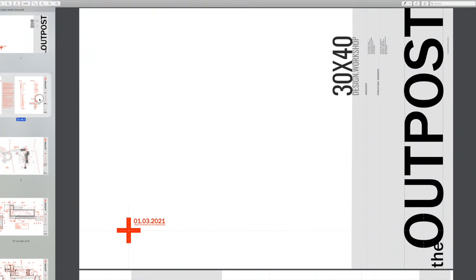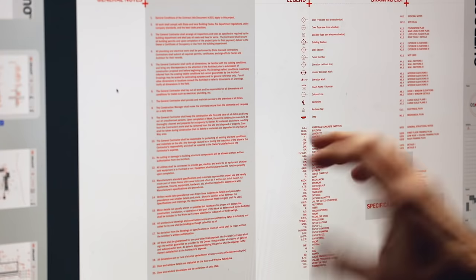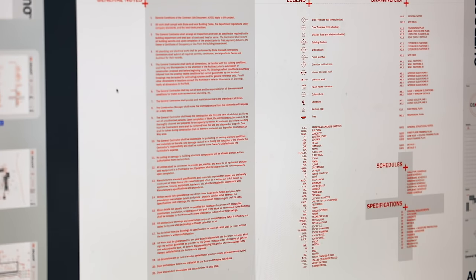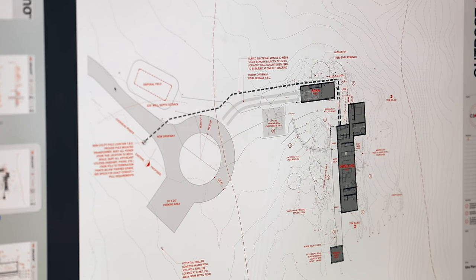We have our drawing set here — about 35 to 40 drawings at the moment — and we always start off with the very general and move to the specific. Any written word takes precedence over a drawn line, in the same way that a large-scale detail might take precedence over a smaller-scale detail. The opening sheet is just to orient the viewer to our drawing conventions, symbol legend, abbreviations, and an index of all the documents we're providing to the contractor. The opening sheets are generally site plan, landscape drawings, and overview drawings — taken from the 30,000-foot level.